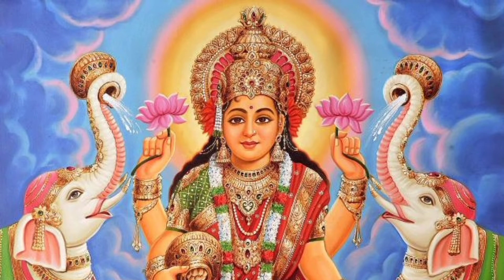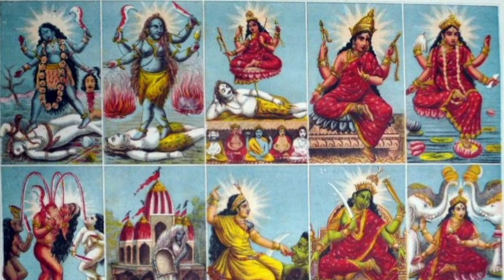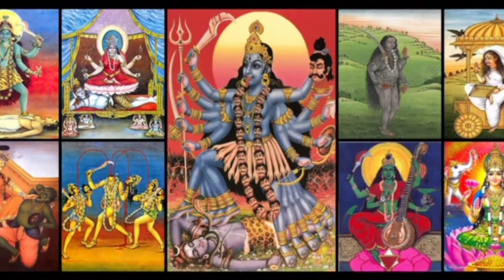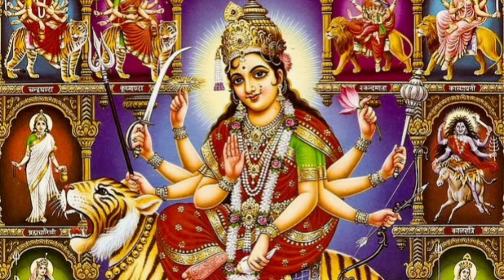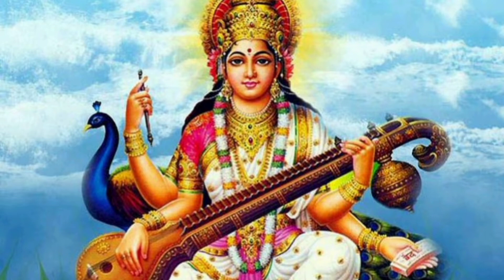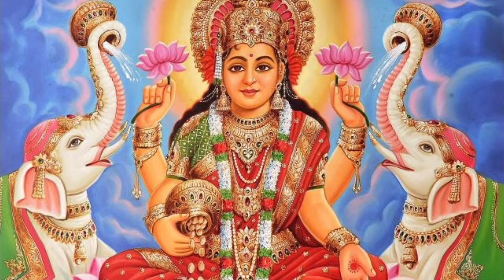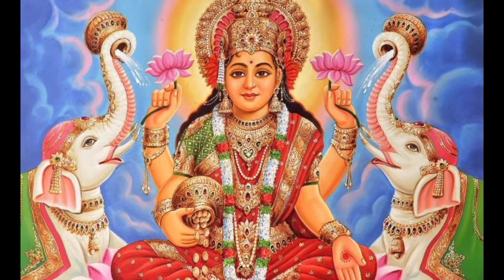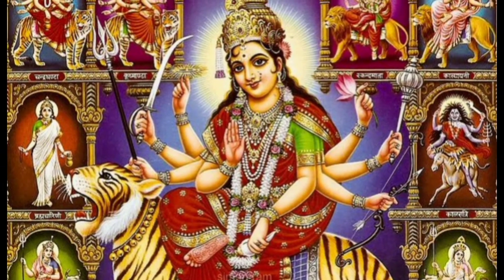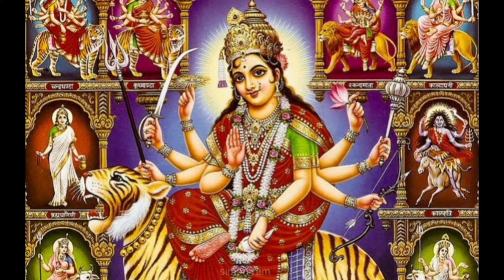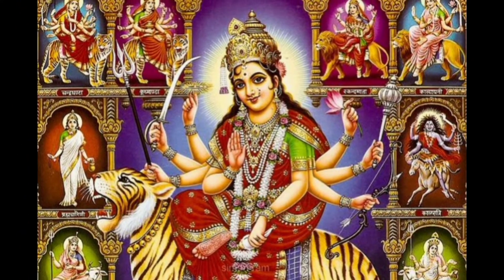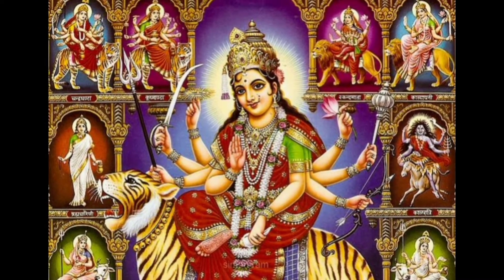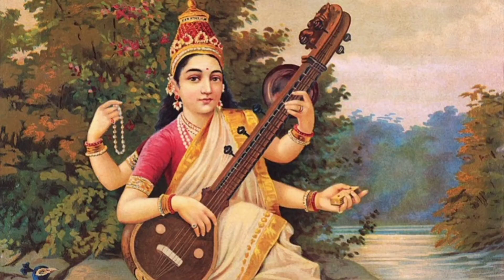Worshipping Goddesses in Hinduism is called Shaktism. Even though there are thousands of Goddesses worshipped every year, the main three are Goddess Lakshmi, Goddess Saraswati, and Goddess Durga. Goddess Lakshmi is known for wealth, and that's why in every Hindu house you would find a portrait of her. Goddess Durga is known for strength and protects her devotees from every evil thing, and she defeated the demon king Mahishasura. Goddess Saraswati is known for art, music, wisdom, and knowledge, and she is commonly worshipped by students.